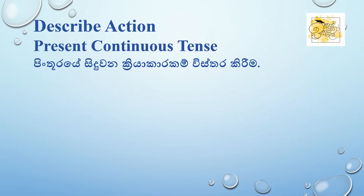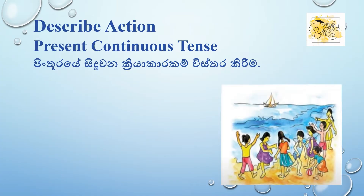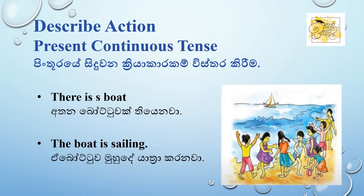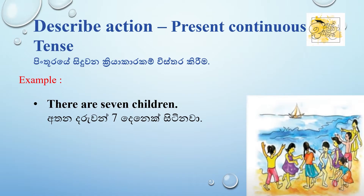Describing action — so for this, we use present continuous tense. Then to describe what something is doing, first say 'There is a boat' (athana bot do ak tiyanwa), then describe its action: 'The boat is sailing' (e bot do ak mhude yaathra karanwa). There are seven children — describe their actions using the same structure.